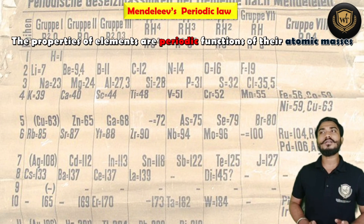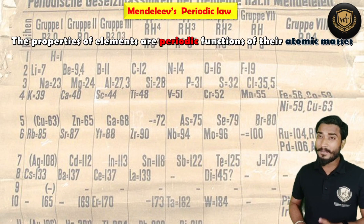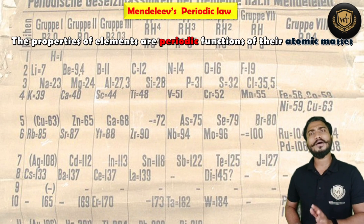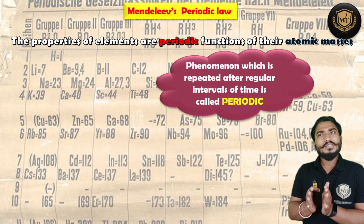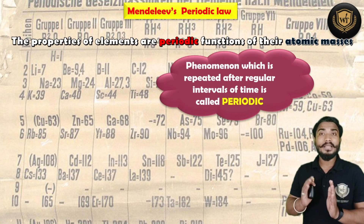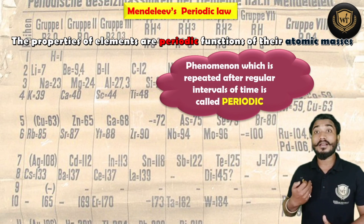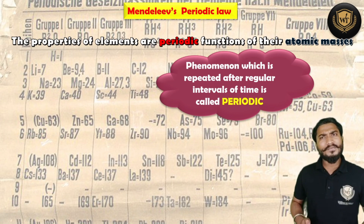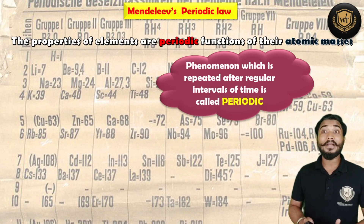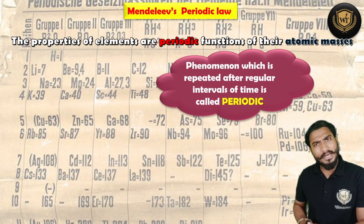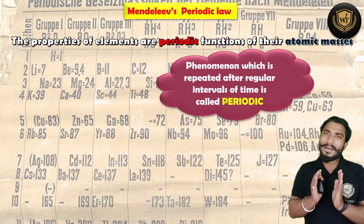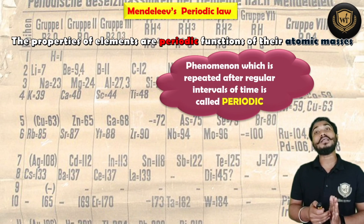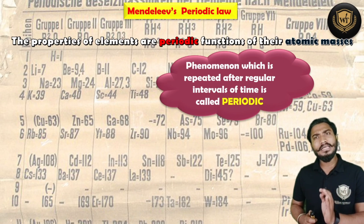Based on this table, he gave a very beautiful law — Mendeleev's Periodic Law. The law states that the properties of elements are a periodic function of their atomic masses. The important word here is 'periodic.' Periodic means something that keeps on repeating. For example, the sun rises in the morning and sets in the evening — every day, the sun will rise in the morning only. That is periodic — something which keeps on repeating.